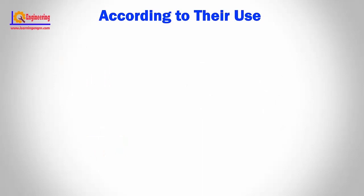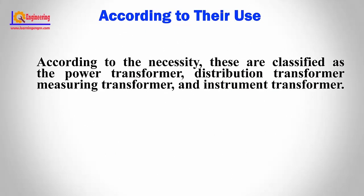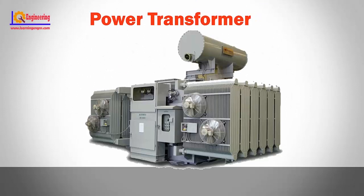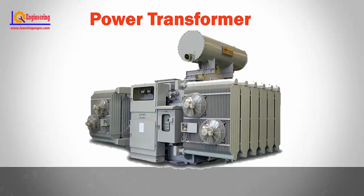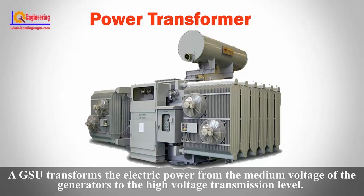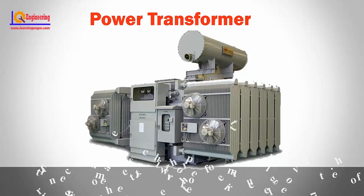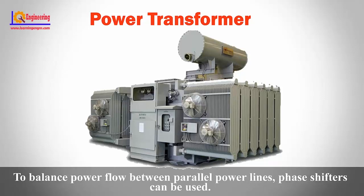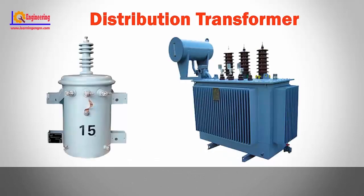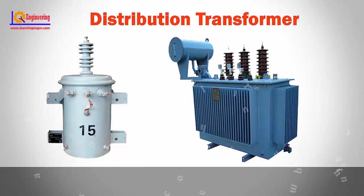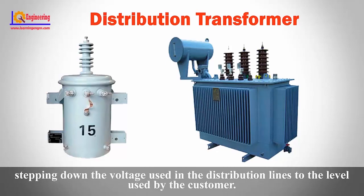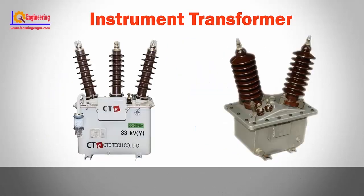According to their use, transformers are classified as power transformer, distribution transformer, measuring transformer, and instrument transformer. A power transformer located directly next to a power plant is called a GSU — generator step-up unit. A GSU transforms electric power from the medium voltage of the generators to the high voltage transmission level. A distribution transformer, or service transformer, provides the final voltage transformation in the electric power distribution system, stepping down the voltage used in distribution lines to the level used by the customer.